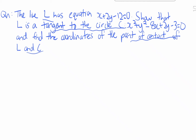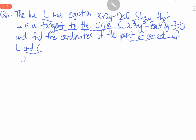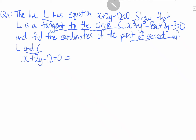We are given this equation for the line: x plus 2y minus 12 equals zero. Let's make x the subject, so x equals 12 minus 2y, and we are going to use this and plug it into the equation of the circle.